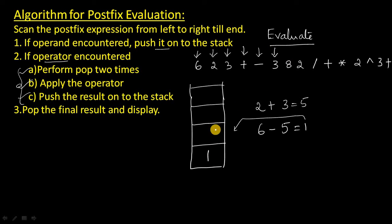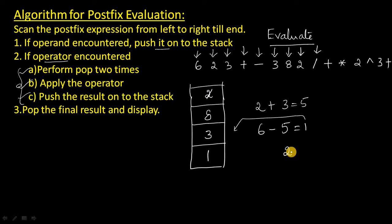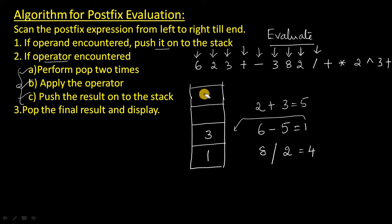And next one is 3 — 3 is an operand, so add it to the stack. Next one is 8 — 8 is an operand, add it to the stack. Next one is 2 — it is also an operand, add it to the stack. Next one is division — division is the operator. So pop 2 from the stack, pop 8 from the stack, then apply the division operator. The result will be 4. Add this 4 again to the stack, removing the 8 and 2.